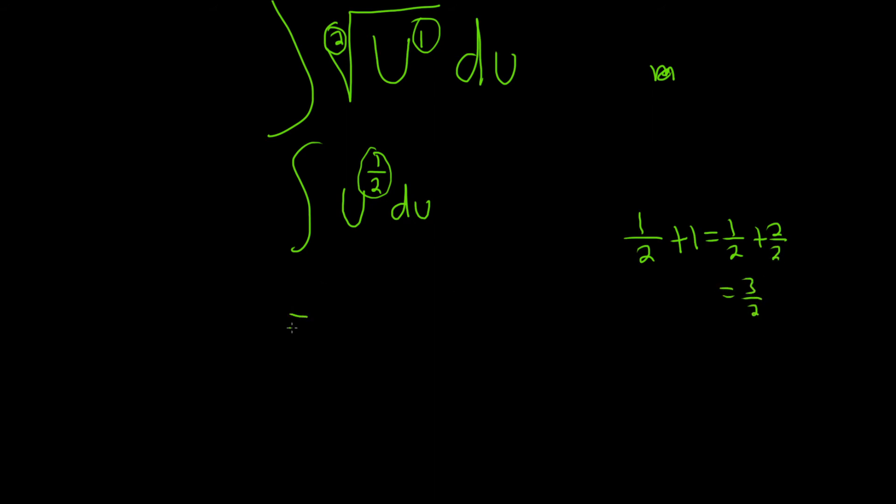With the power rule, you drop the integral sign, you drop the du, then you write your u to the 3 halves. And now you're dividing by 3 halves, so you put a division sign, and then 3 over 2. It's really important to put the plus C. The plus C is called the constant of integration, really key to have that there.